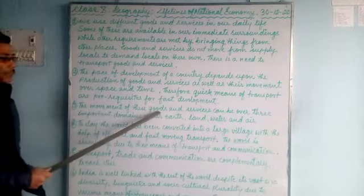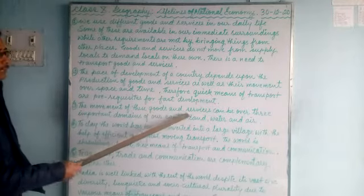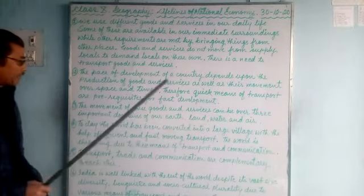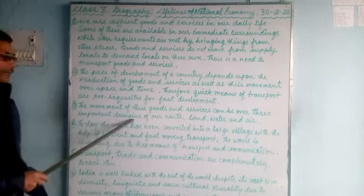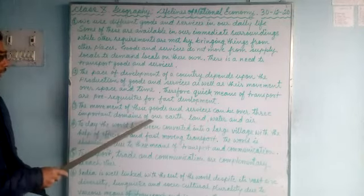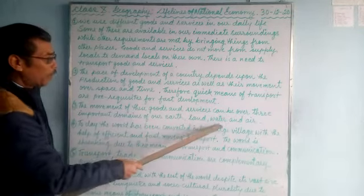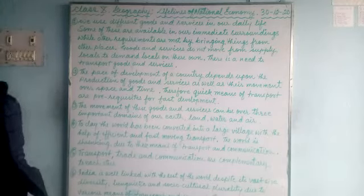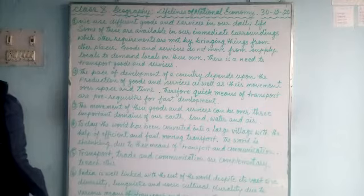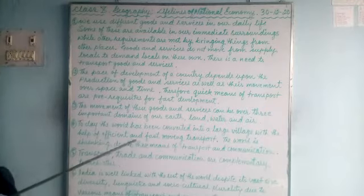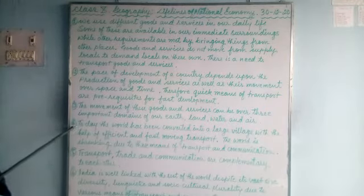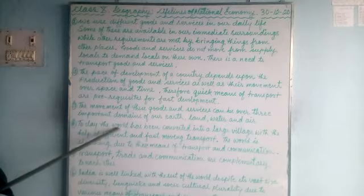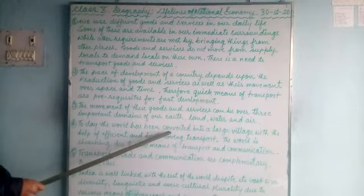For any country that wants to develop faster, its means of transportation must be very efficient, and goods and services must be produced and transported to the market or to consumers in no time. Number three: the movement of these goods and services can occur over three important domains — land, water, and air. Goods can be transported through railways, roads, air, and water.